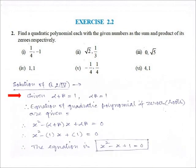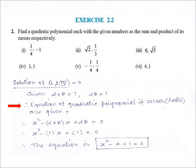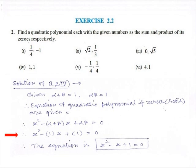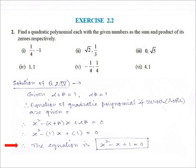Fourth part: given alpha plus beta is equal to 1 and alpha into beta is equal to 1. Therefore, the equation of the quadratic polynomial, if zeros (that is, roots) are given, is x² minus (alpha plus beta)x plus alpha·beta is equal to 0. Putting the values, we get x² minus 1·x plus 1 is equal to 0. Therefore, the equation is x² minus x plus 1 is equal to 0.